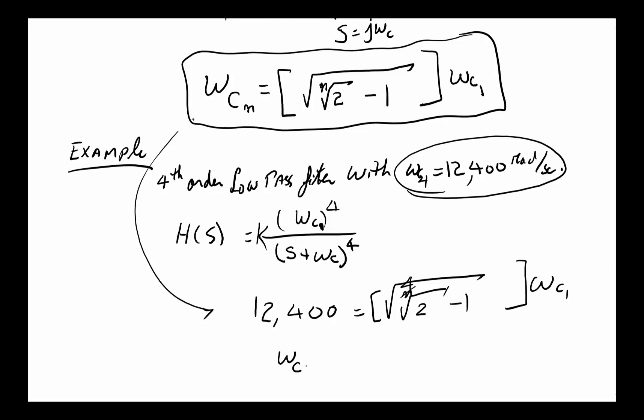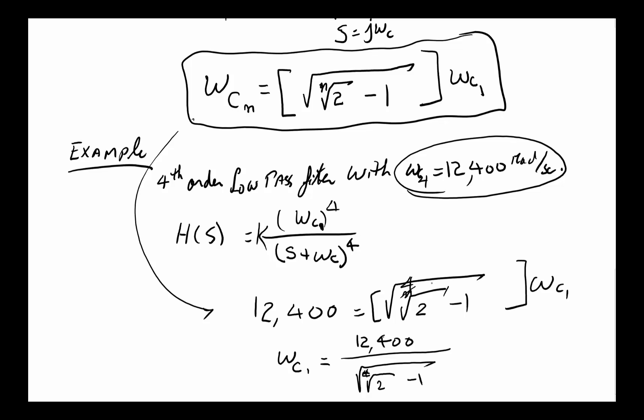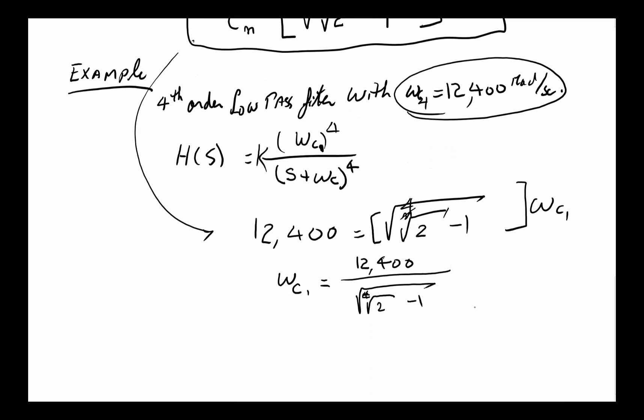So omega_C for the one filter is simply going to be 12,400 divided by square root of fourth root of 2 minus 1. Once we have that,